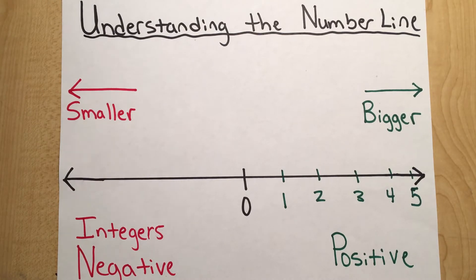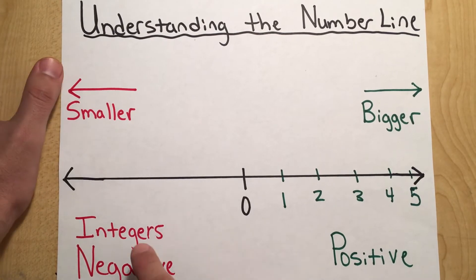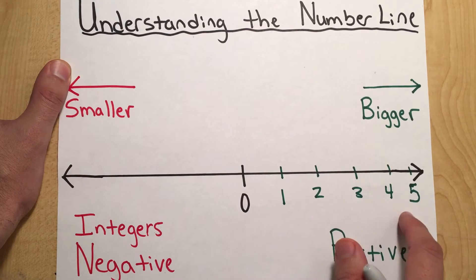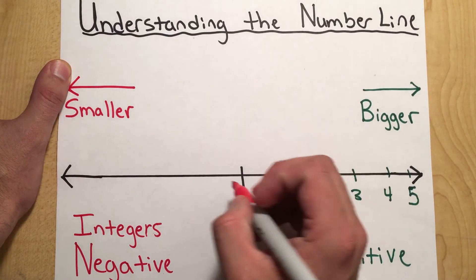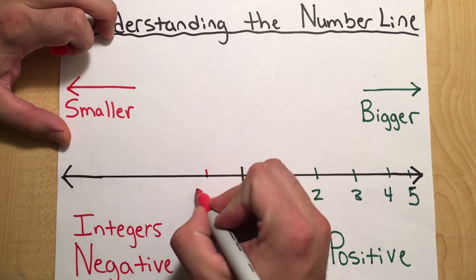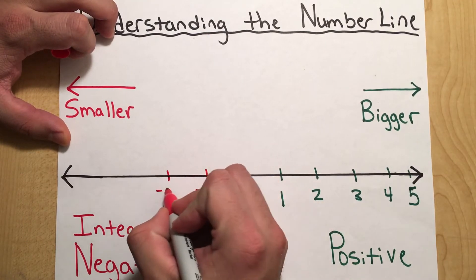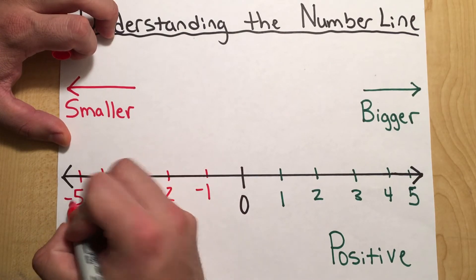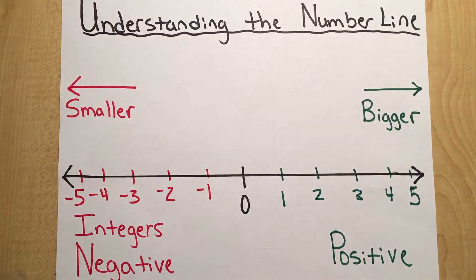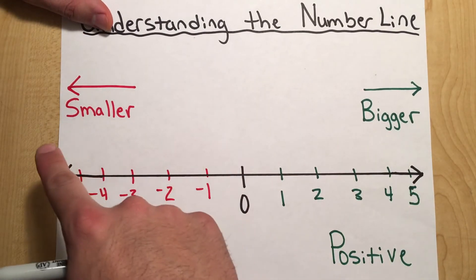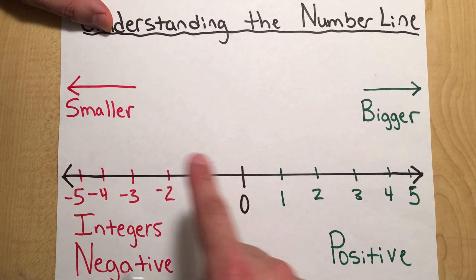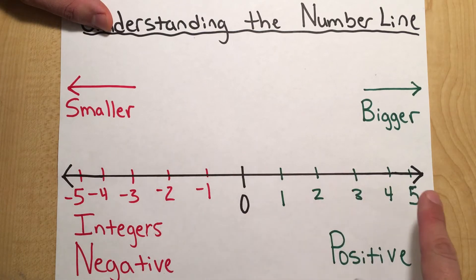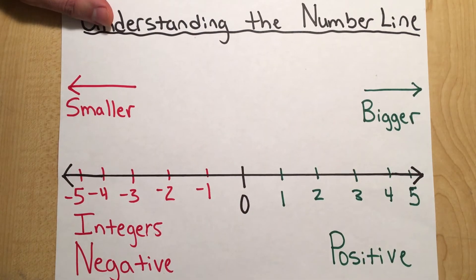To the left of zero, now we're going to have integers. Integers basically means negative numbers. So it's going to look similar to the right side, but now we're going to have negatives to the left of zero. I'm going to put in here: negative one, negative two, negative three, negative four, and negative five. The further we move to the left, the smaller our numbers get. The further we move to the right, the bigger our numbers get on the number line.